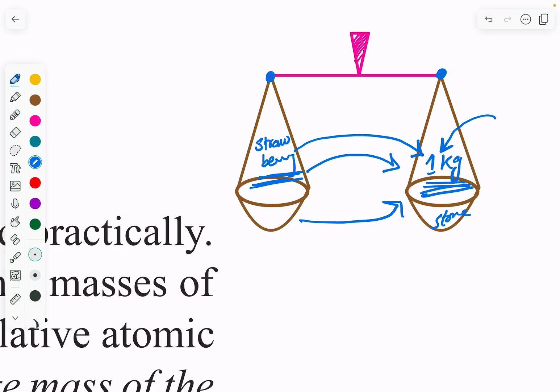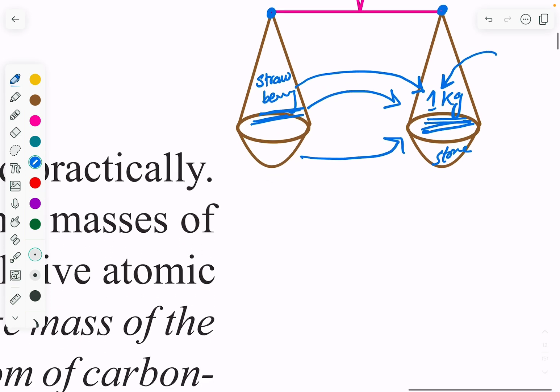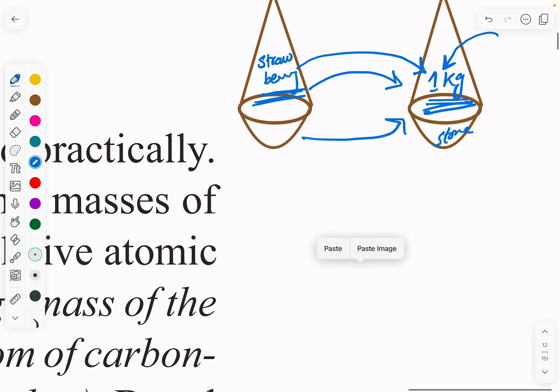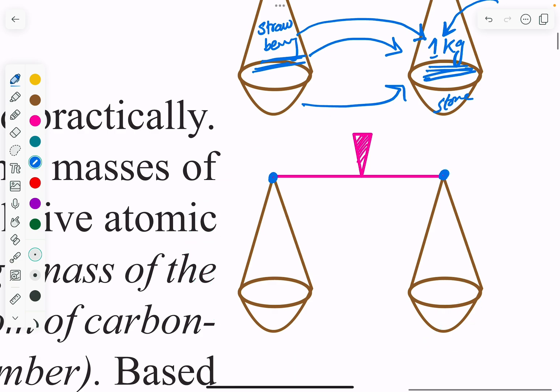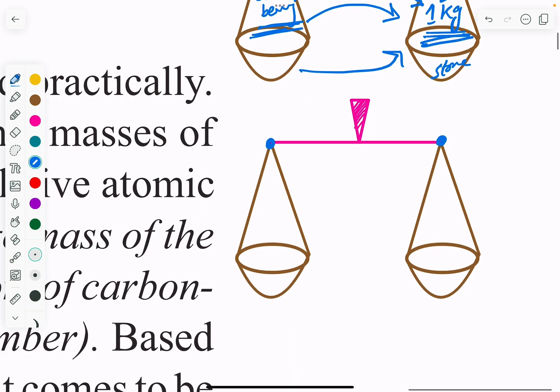In a similar manner, if I want to find the mass of oxygen, I can't just keep 1 kg on the balance. Atoms are very small — they won't even be 1 gram. So I can't find their mass in the same way as strawberries.